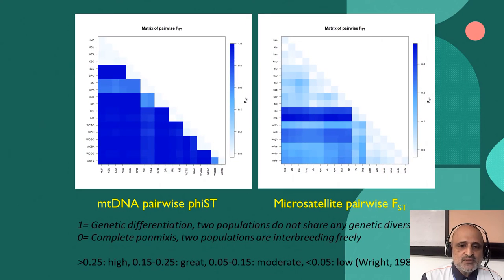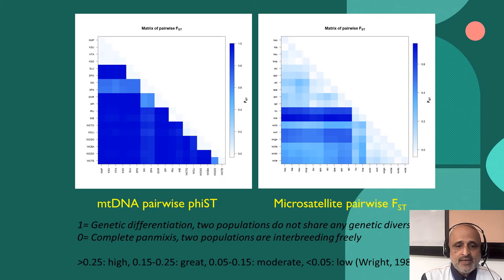In terms of pairwise distance, which indicates genetic differentiation, distinct variation was observed between some populations. However, a majority of the populations indicated that individuals were not inbreeding within the broader population.